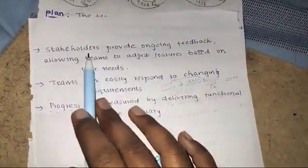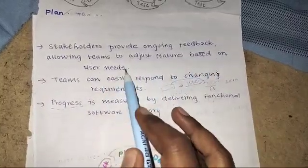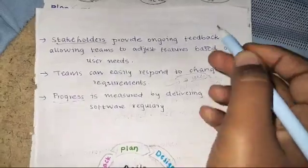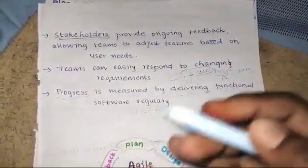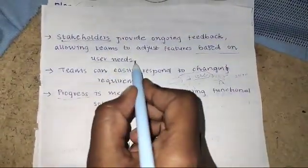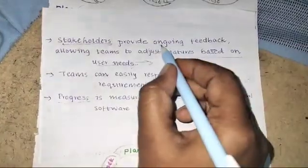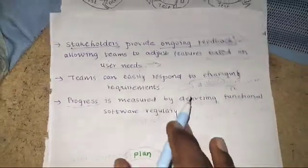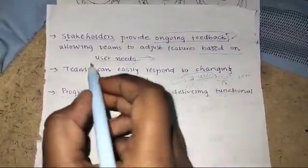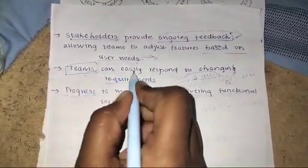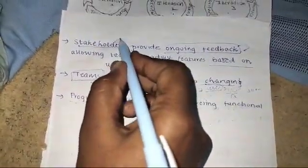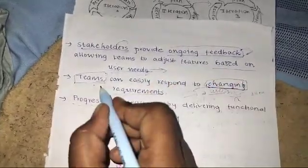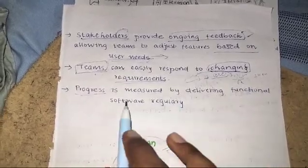Stakeholders provide ongoing feedback, allowing teams to adjust based on user needs. Agile development allows stakeholders to provide continuous feedback so we can make changes easily based on user needs. By considering this feedback, we can make changes for the project, and teams can easily respond to changing requirements. The stakeholders give feedback and based on that we can change the project every time.